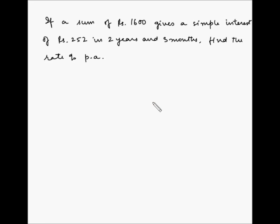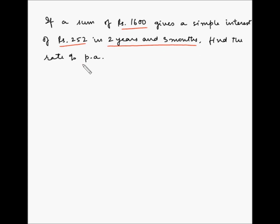If a sum of rupees 1600 gives a simple interest of rupees 252 in two years and three months, find the rate percent per annum. Here we have been given the principal amount which is rupees 1600, the simple interest at the end of two years and three months, and now we have to find the rate percent per annum.